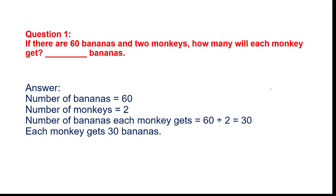Next question: if there are sixty bananas and two monkeys, how many bananas will each monkey get? It's very simple — sixty bananas divided by two monkeys. Sixty divided by two equals thirty. So each monkey gets thirty bananas.